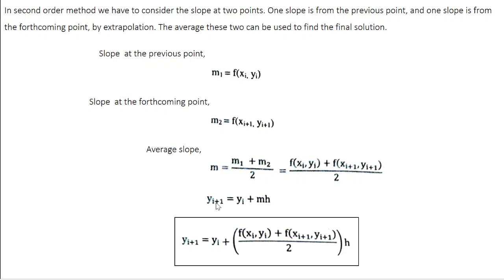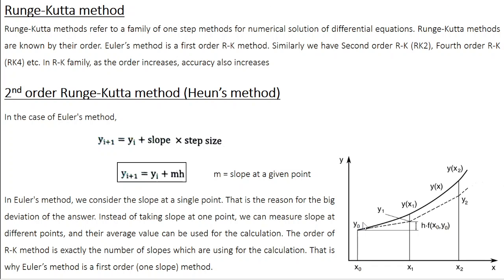There is one problem: to apply this formula you need f(xi+1, yi+1), but this value is unknown. In this kind of problem you are given only the initial point (xi, yi) and you do not know xi+1 or yi+1. Unless you calculate xi+1 and yi+1, you cannot determine the slope at that point. To calculate yi+1, you use Euler's method. Since x values are equally spaced with step size h, xi+1 = xi + h, and yi+1 = yi + h·f(xi, yi).